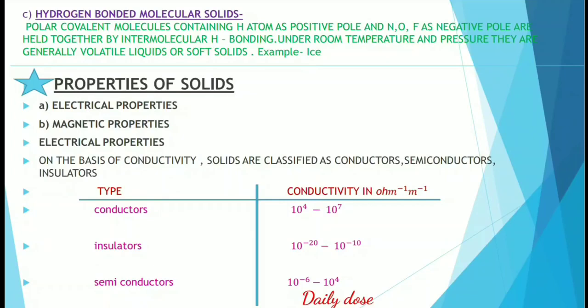The next topics are the properties of solids — I'll be going into detail in my next video. You can see on screen that I'll be discussing two types: electric and magnetic properties, including conductors, insulators, and semiconductors. Please stay tuned for my next video. Thank you for watching.